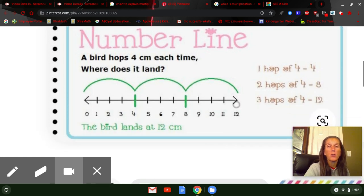Finally, we can look at it on a number line. Okay, a bird hops four centimeters each time. Where does it land? Well, if it hops four centimeters, the first hop, and four centimeters, the second hop, and four centimeters, the third hop, that's three hops with four centimeters for each hop.